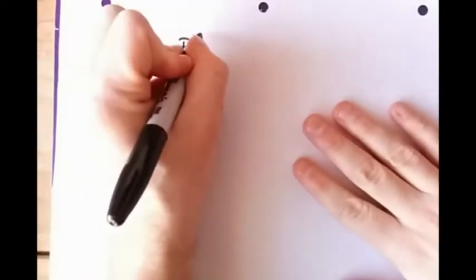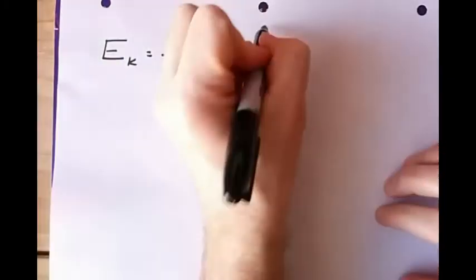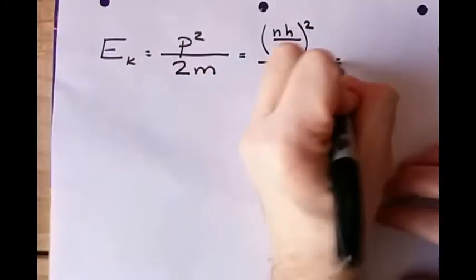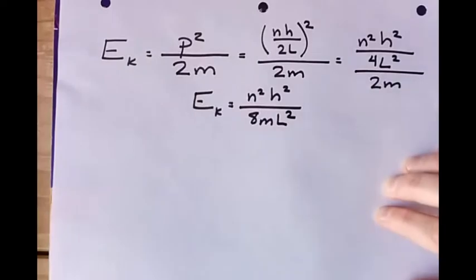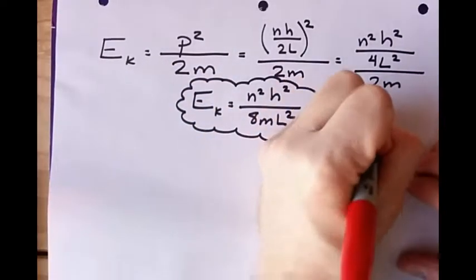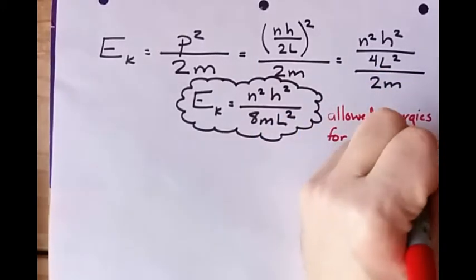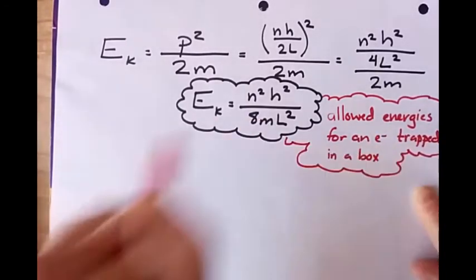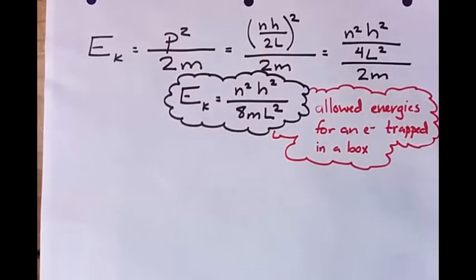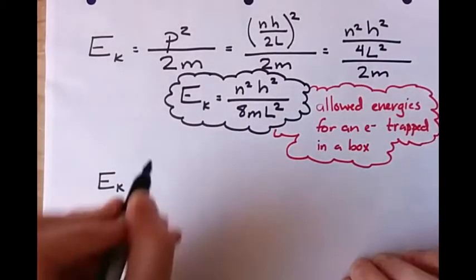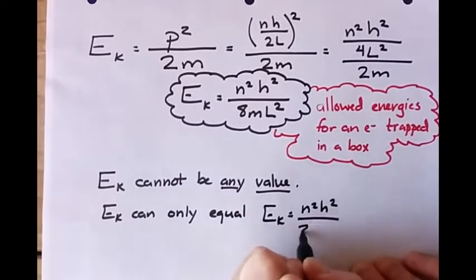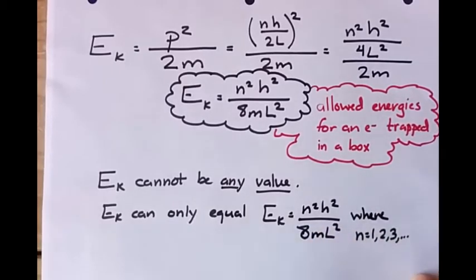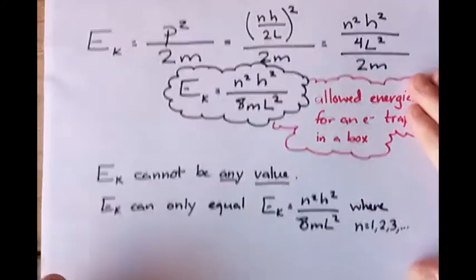We can go one step further and think about the energy. The kinetic energy of an object equals its momentum squared divided by twice its mass. If we put in our expression for the momentum of an electron trapped in a box, the energy of an electron trapped in a box equals N squared H squared over 8ML squared. Those are the energies allowed for an electron in a box.